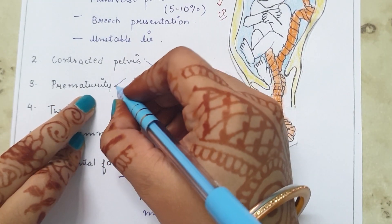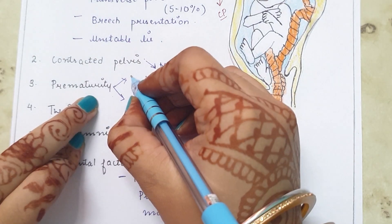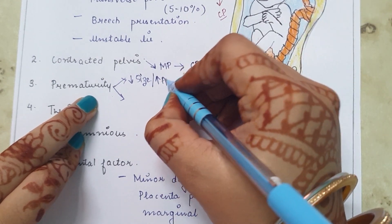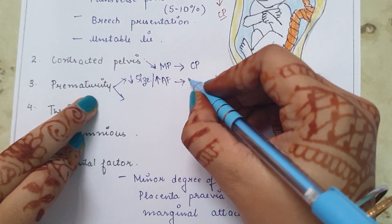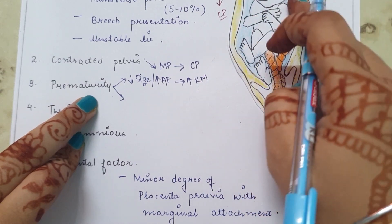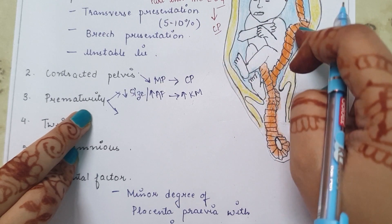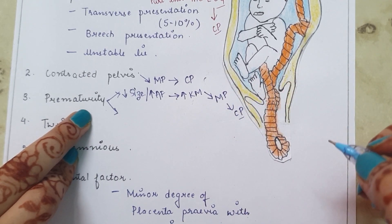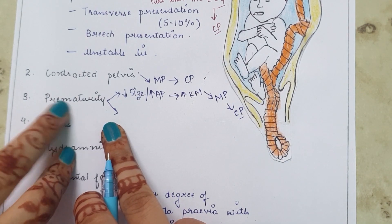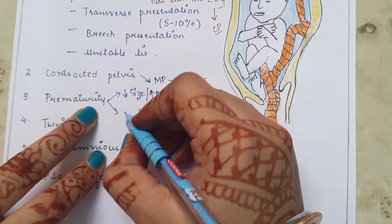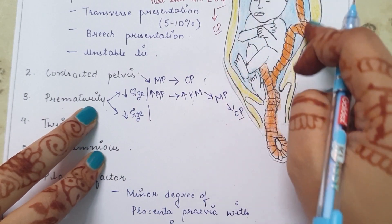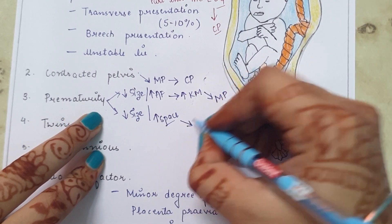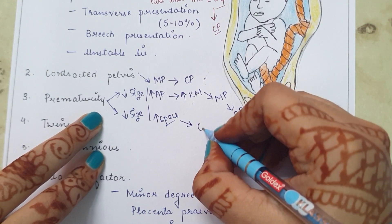Next is prematurity. In prematurity there are two possibilities. First, the size of the fetus is less and the amniotic fluid is more inside the uterine cavity, which allows more excessive movements, increasing chances of malpresentations, resulting in cord prolapse. Second, because the fetus is smaller, more space is available inside the uterine cavity, so the umbilical cord easily slips downward, leading to cord prolapse.